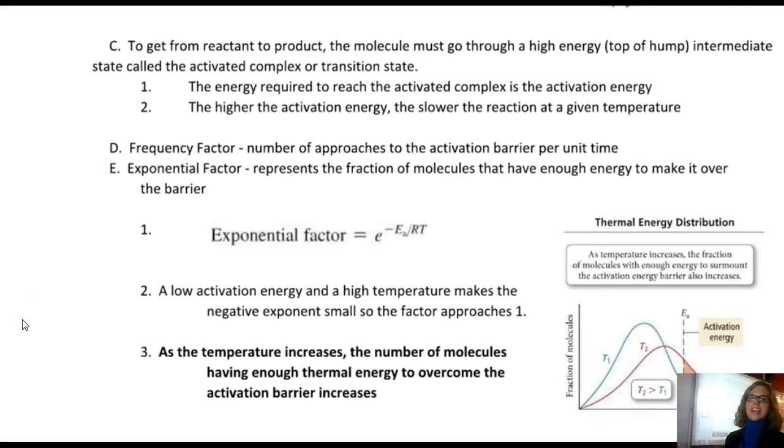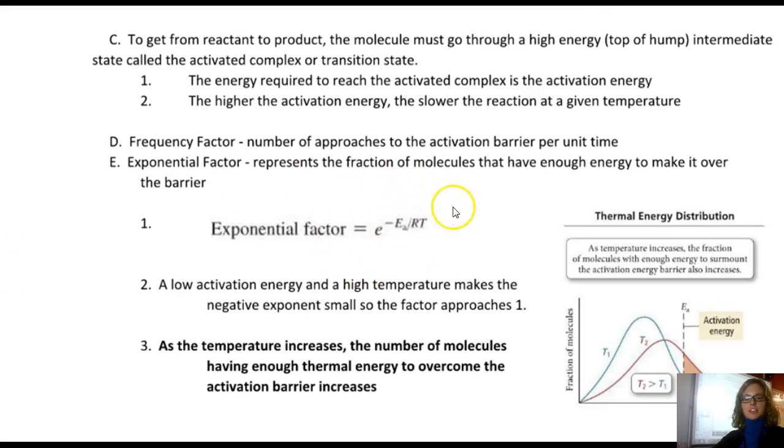So that top hump being that activated complex, letter C is going back over things that we already talked about. Looking back up at the top at that equation, K is equal to the frequency factor A, the number of approaches to the activation barrier per unit time. Frequency meaning how frequently those particles are attempting to react. Maybe they don't react every time, but how much do they react? And then the other part of this, besides the frequency factors, there's this exponential factor, the other part of the equation. It represents a fraction of molecules that have enough energy to make it over the barrier.